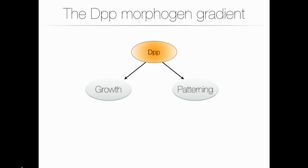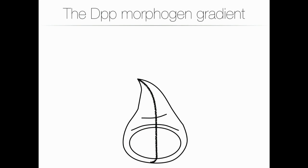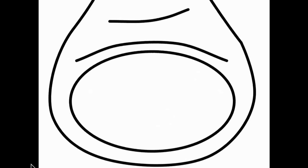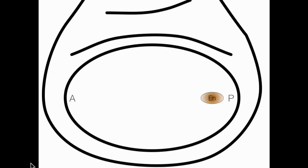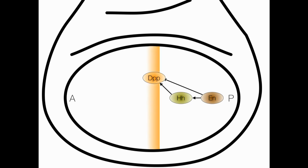DPP as a morphogen controls growth and patterning — two tightly regulated processes during development — and I'm studying it in the wing disk. DPP is produced at the anterior-posterior boundary, and it starts to be produced when Engrailed is expressed in the posterior compartment, driving the expression of Hedgehog. Hedgehog will diffuse and reach cells that Engrailed doesn't, and these cells are the ones that produce DPP, which will be secreted and produce the long-range gradient.